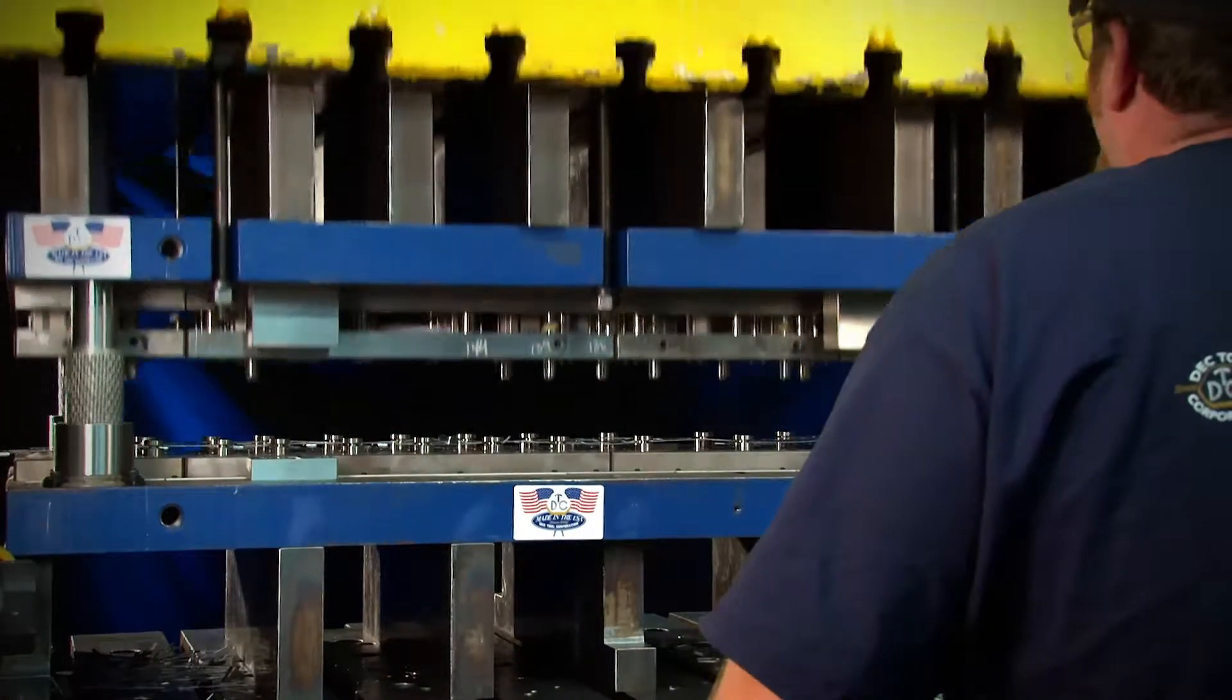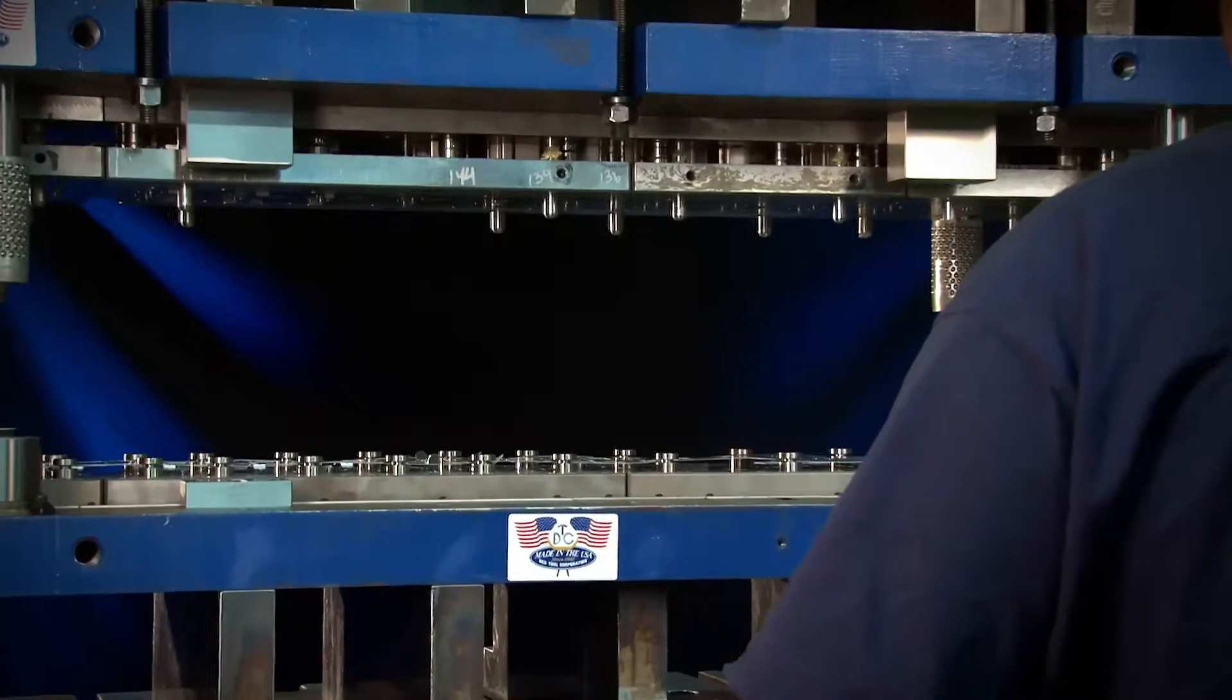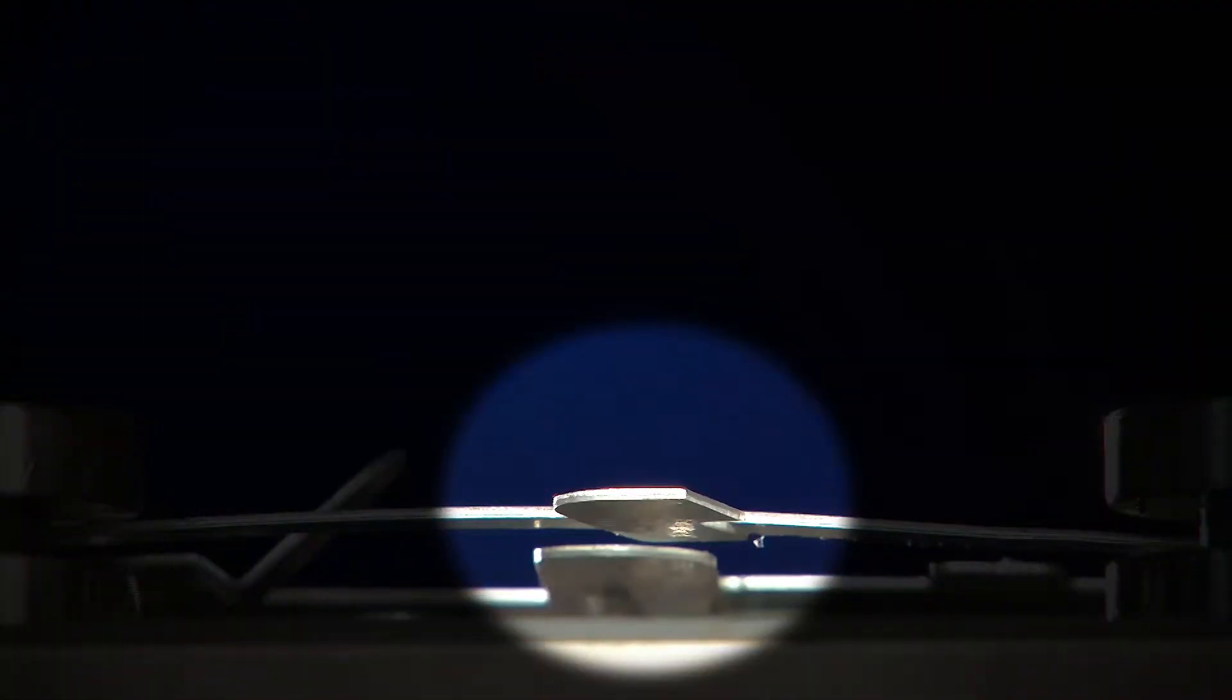During the stamping operation, slugs expand into these precision grooves, which prevents them from pulling back up to the top of the die block and onto the die surface where they can cause damage to the strip, the final part, even to the die itself.